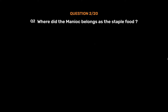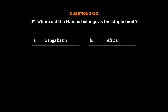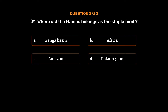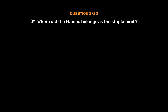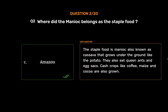Question number 2. Where does the Manioc belong as the staple food? Option A: Ganga Basin. Option B: Africa. Option C: Amazon. Option D: Polar region. The correct answer is Option C, Amazon. The staple food is Manioc, also known as cassava, that grows under the ground like the potato. They also eat queen ants and egg sacks. Cash crops like coffee, maize and cocoa are also grown.